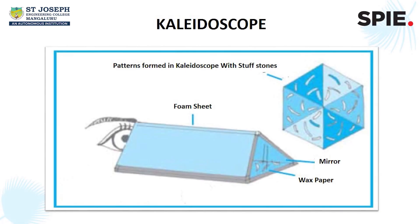The basic principles used in the kaleidoscope are the law of reflection and white light. When the light hits the surface of the mirror, it gets reflected at an angle, hence creating multiple reflections of light.